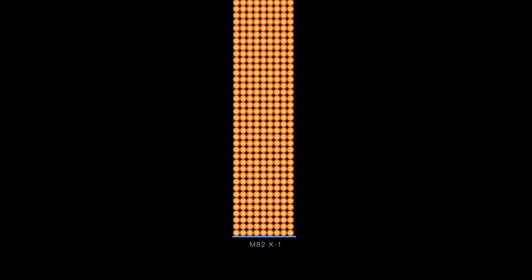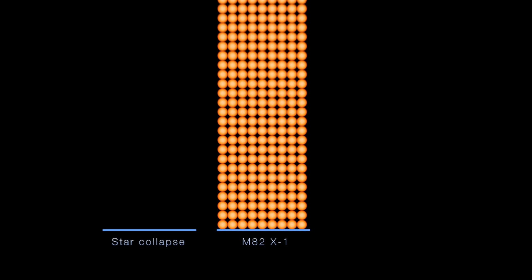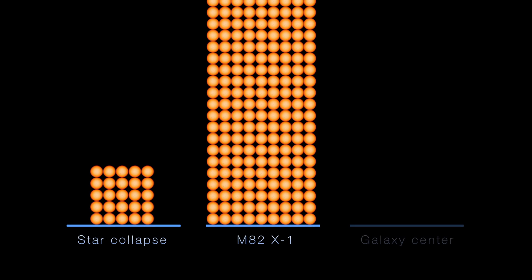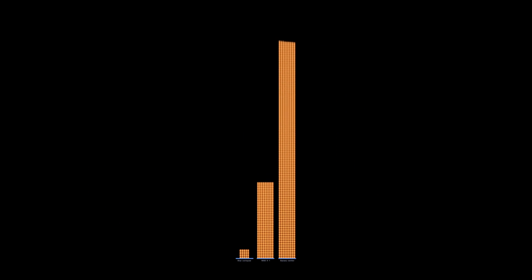Measured masses for black holes formed by stars reach about 25 solar masses, and those found in galaxy centers weigh at least 10,000 times more. Only a handful of black holes have been discovered with inferred masses between these extremes.